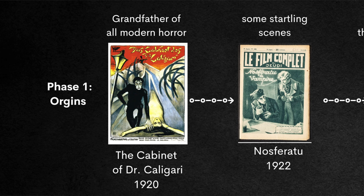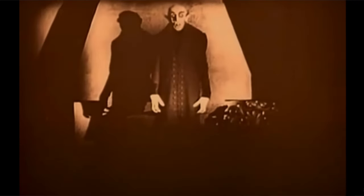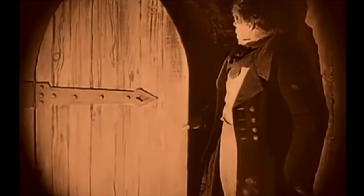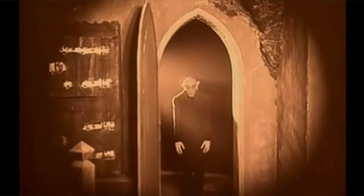A couple years later, in 1922, Nosferatu was released - an unofficial Dracula remake. Not a lot of jump scares, but there are some creepy scenes. When the character sees Nosferatu across the hallway and closes the door to hide, all of a sudden the door opens, the anticipation builds, and the fact that he's not there right away makes for a minor jump. These were just kind of proto-beta jump scares.